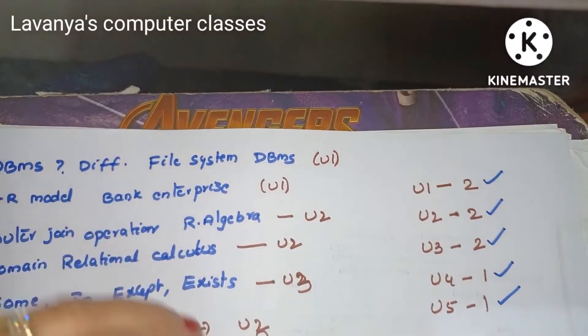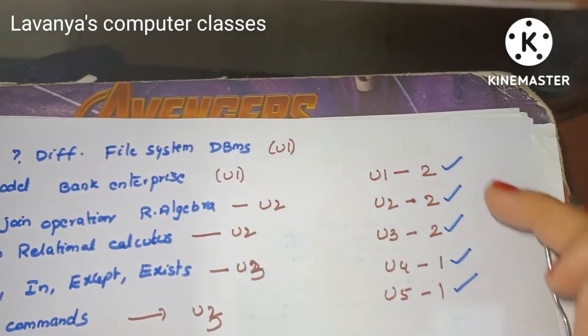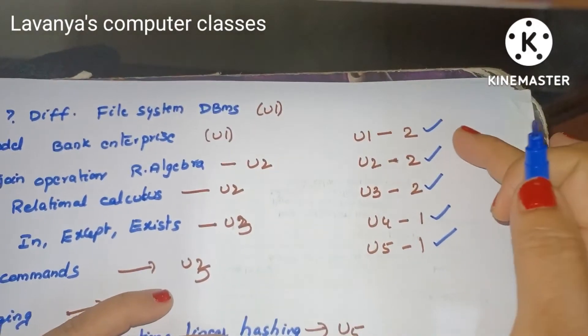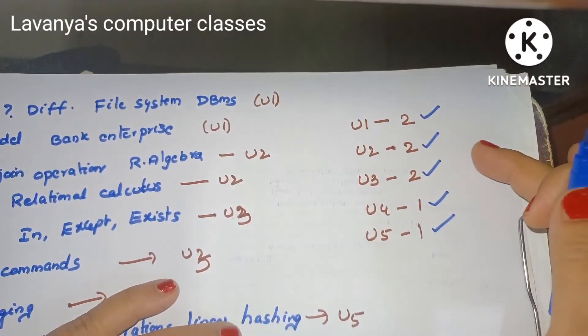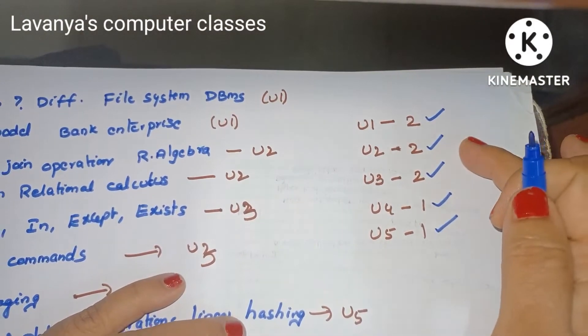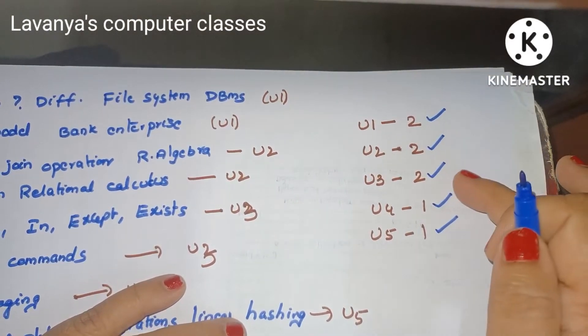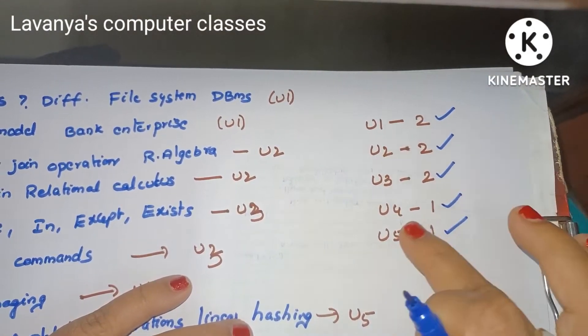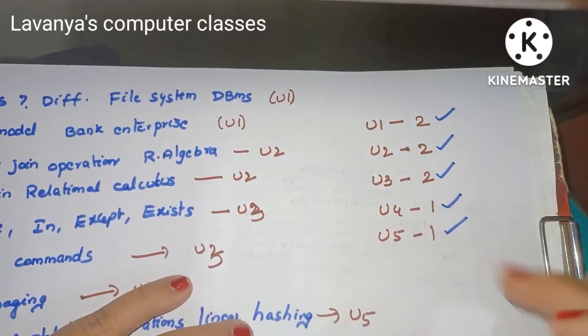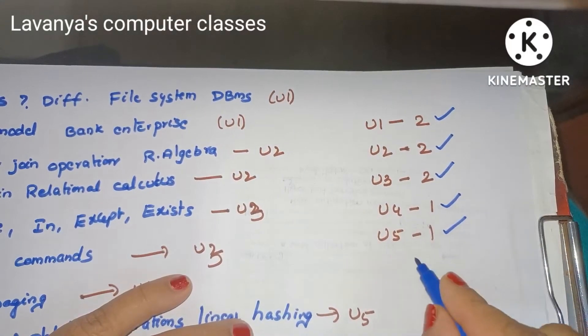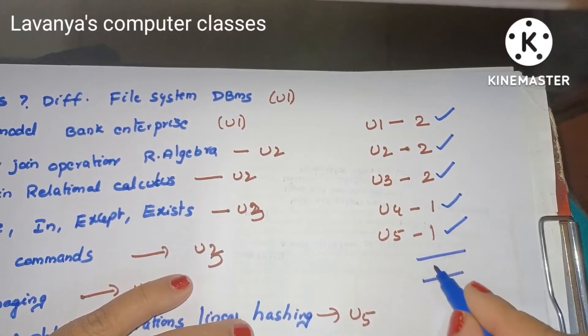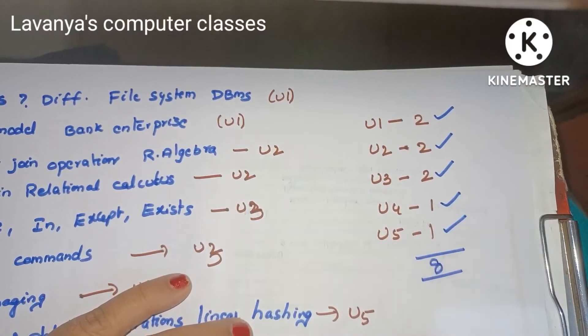Out of 5 units: from unit 1, 2 questions; from unit 2, 2 questions; from unit 3, 2 questions; unit 4 and unit 5 only 1 question each.